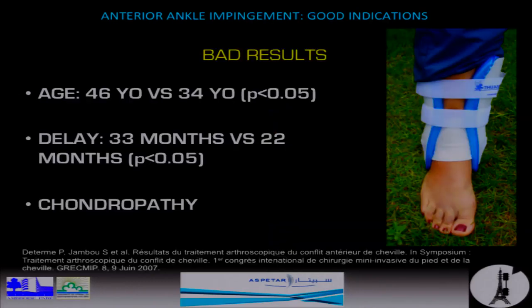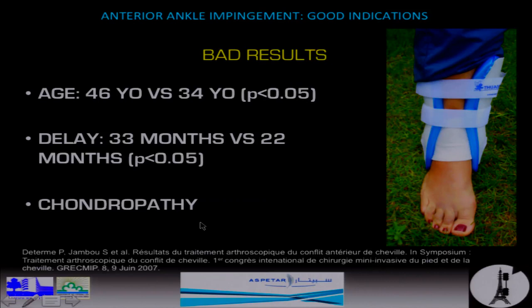We showed in a multicenter study in France that with arthroscopic treatment of anterior ankle impingement, we can have bad results. The criteria for bad results were: older patient age, with patients about 12 years older than those with good results; a longer delay between onset of symptoms and treatment — about two years for good results versus three years for bad results; and the presence of chondropathy associated with the anterior ankle impingement as a criterion for bad results.